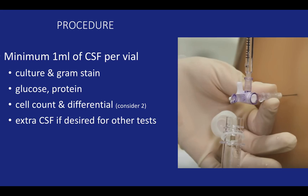Make sure you get enough fluid — a minimum of one ml per vial is recommended, and you may need more. You will want to get a culture and gram stain, glucose and protein, and a cell count with differential every time you do an LP. A cell count and differential on both the first and last tube may be prudent if you notice the fluid is pinkish in color, so you can see quantitative clearing of RBCs. If you need more CSF for other tests, make sure you know how much you need prior to inserting the needle.